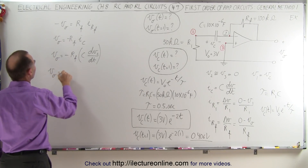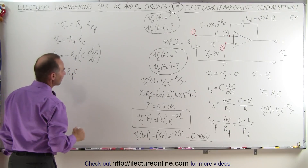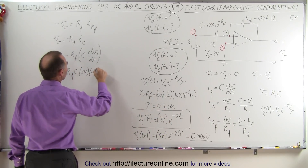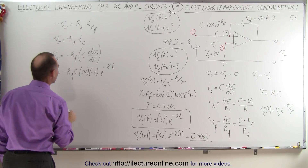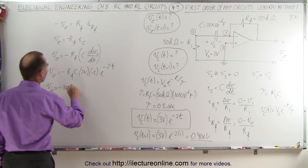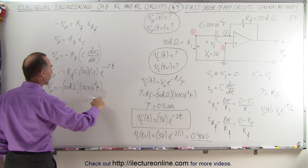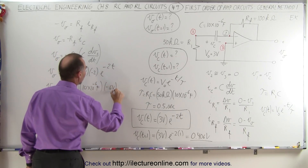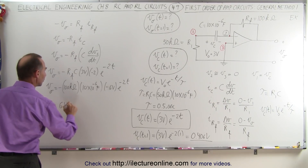The output voltage equals minus R sub F times C times the derivative, which gives the 3 volts times minus 2, times e to the minus 2t. Plugging in numbers: R sub F times C is minus 100 kilohms multiplied by 10 times 10 to the minus 6 farads, which equals 1. So we get a minus times the minus, giving negative 6 volts times e to the minus 2t. Combining everything, the output voltage equals 6 volts times e to the minus 2t.